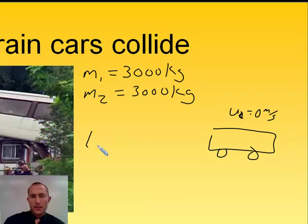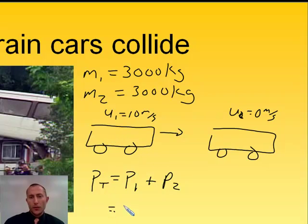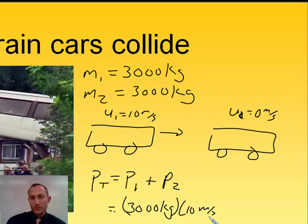The initial velocity of the first car, so u1, is 10 meters per second. And it's traveling towards the second car. So we can very easily find the initial momentum of this system. The initial momentum, or the total momentum, is the momentum of the first object plus the momentum of the second object. The second object isn't moving. So all of the momentum is in the first train car. And so that's going to be 3,000 kilograms times 10 meters per second, which gives us a momentum of 30,000 kilogram meters per second.